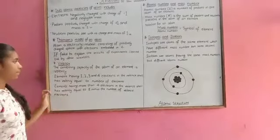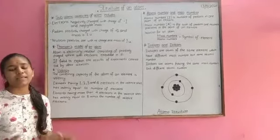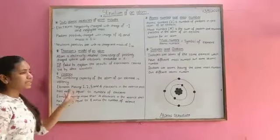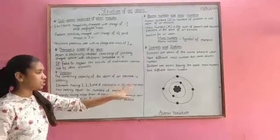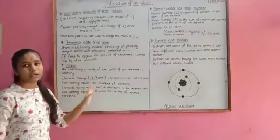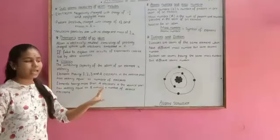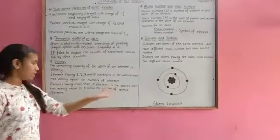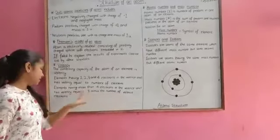Now, valency. The combining capacity of the atom of an element is valency. Elements having 1, 2, 3 and 4 electrons in the valence shell have valency equal to number of electrons. Elements having more than 4 electrons in the valence shell have valency equal to 8 minus the number of valence electrons.